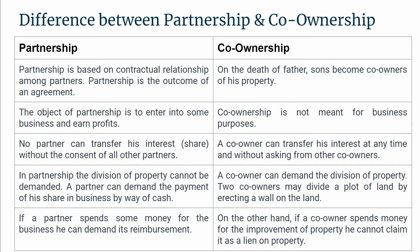In partnership, the division of property cannot be demanded. A partner can only demand the payment of his share in the business by way of cash. In co-ownership, however, a co-owner can demand the physical division of property.